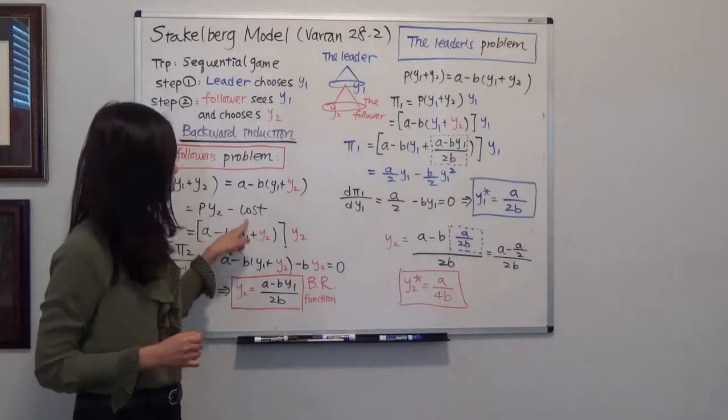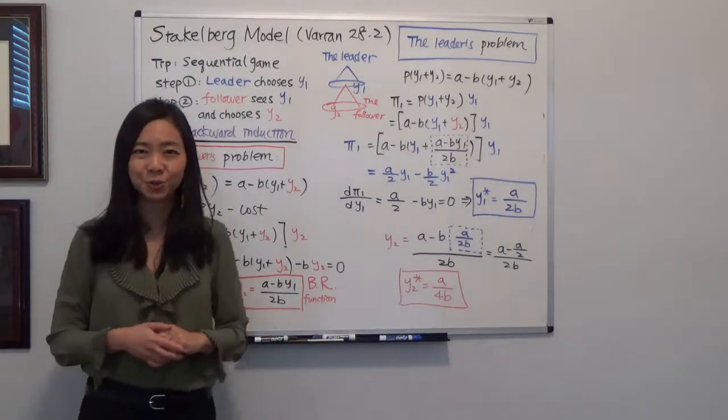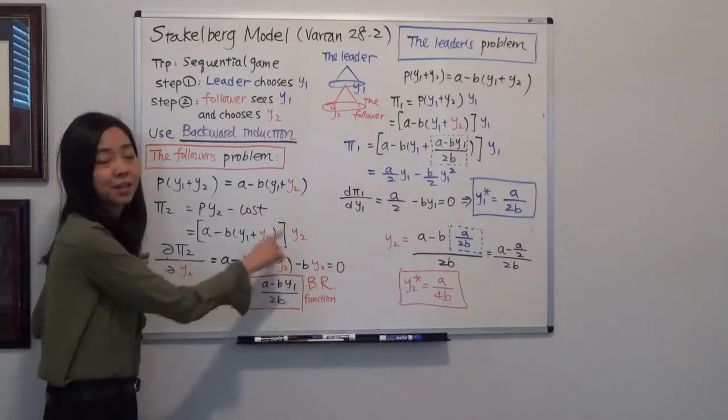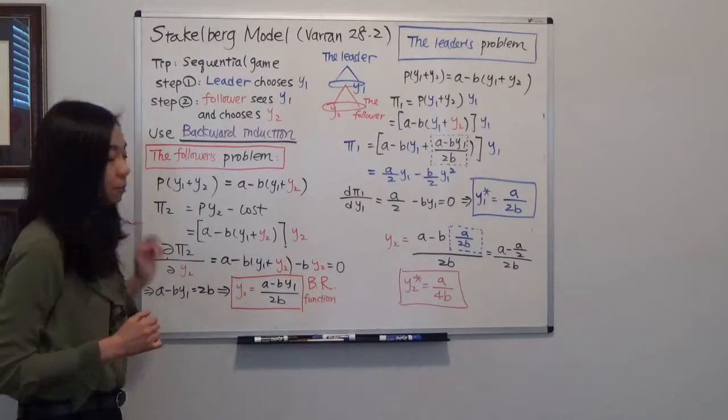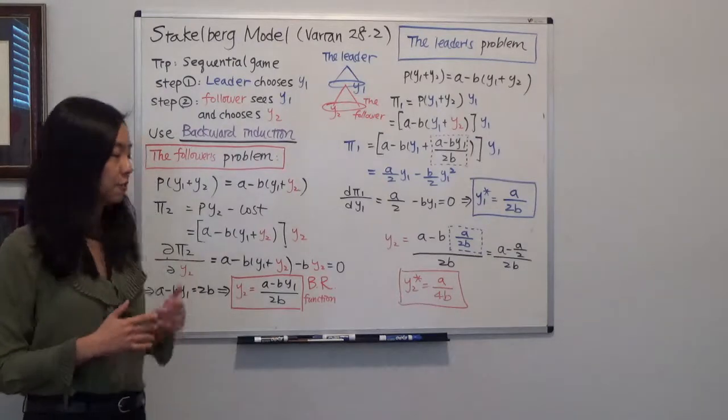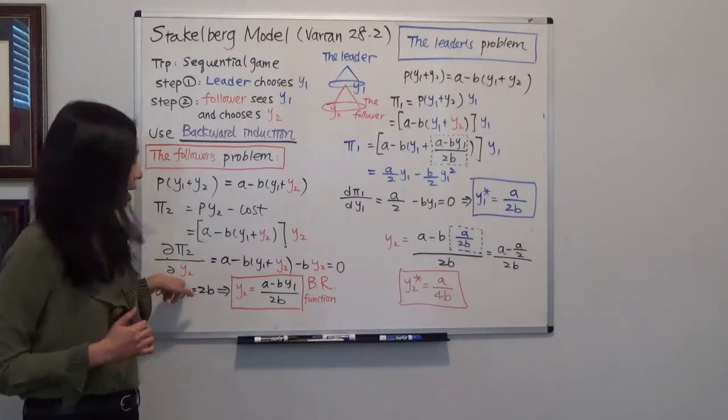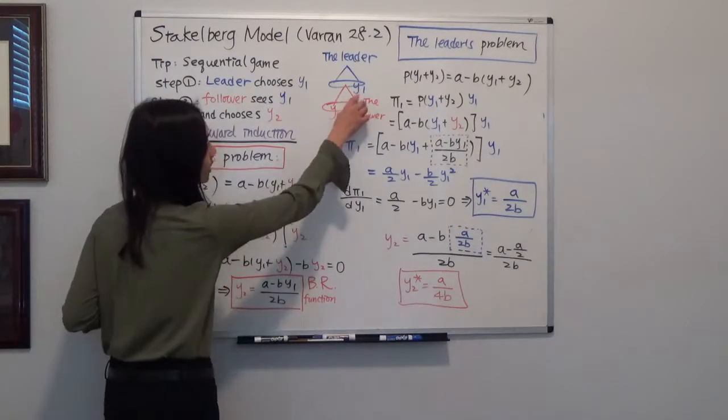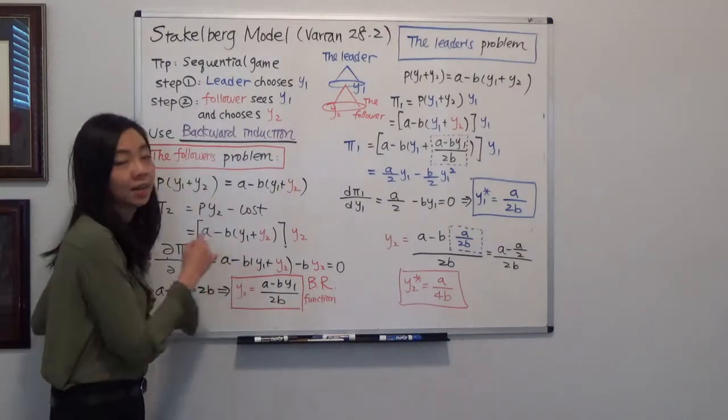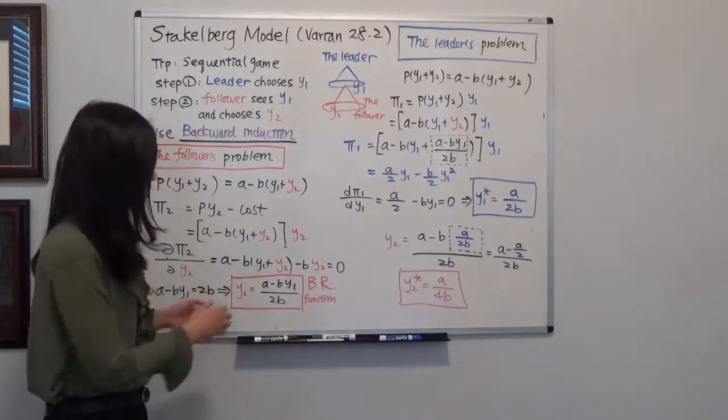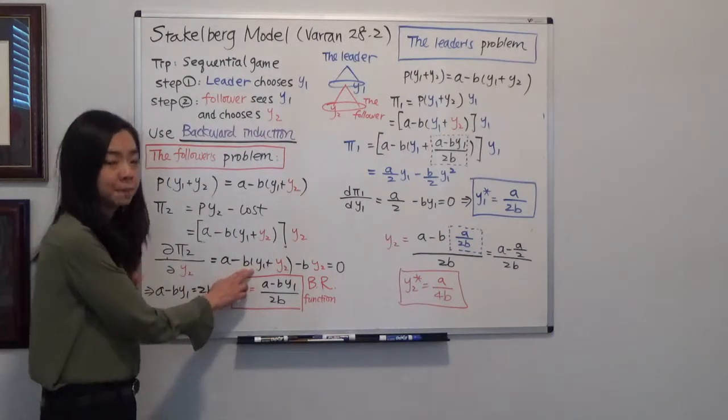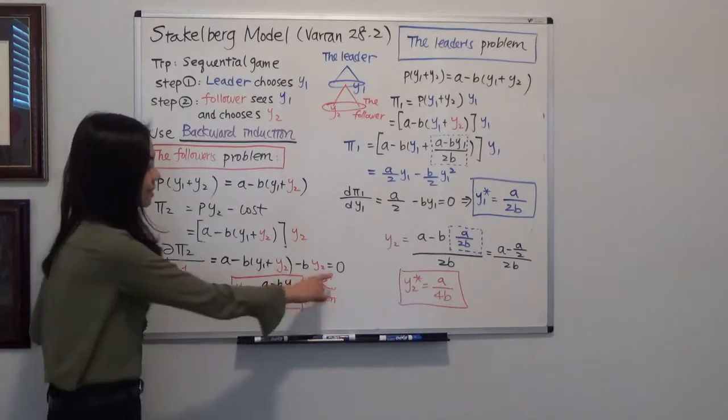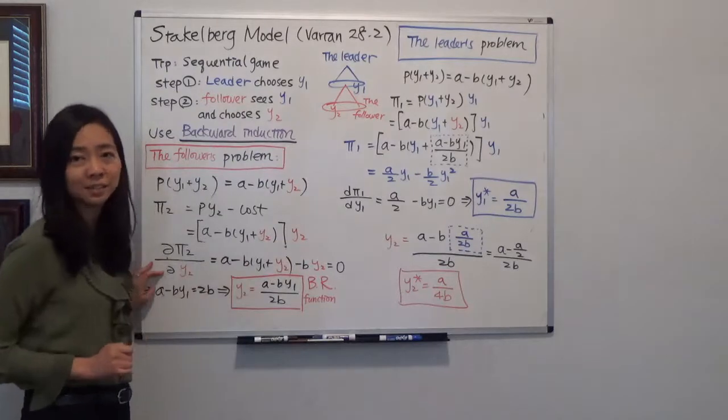In Varian's book, he assumes that the cost is equal to zero. So our profit is just equal to the revenue. To maximize the profit, we need to take the derivative of the profit with respect to quantity. Notice that firm two is going to treat Y1 as given. So Y1 to us really is just a constant. We take the derivative with respect to Y2 and set it equal to zero to maximize our profit.